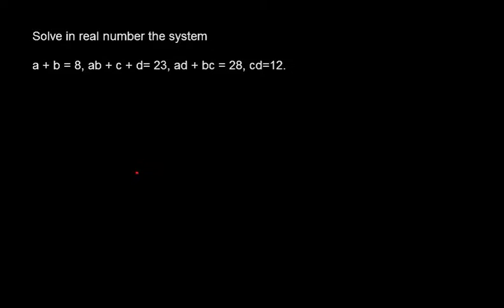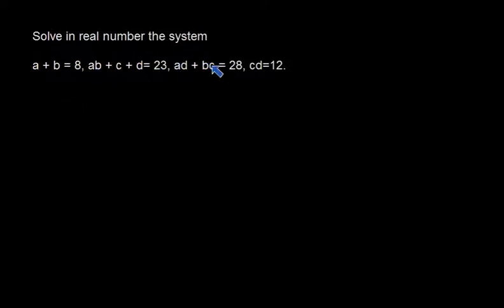Okay guys, let's take another question. It says: solving real numbers, the system of equations — A plus B equal to 8, AB plus C plus D equal to 23, AD plus BC equal to 28, and CD equal to 12. So A, B, C, D are real numbers and we need to solve for them.